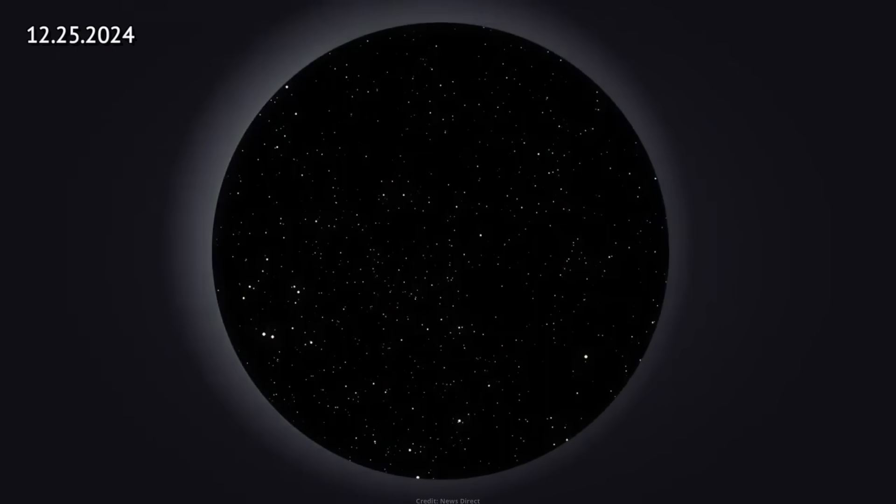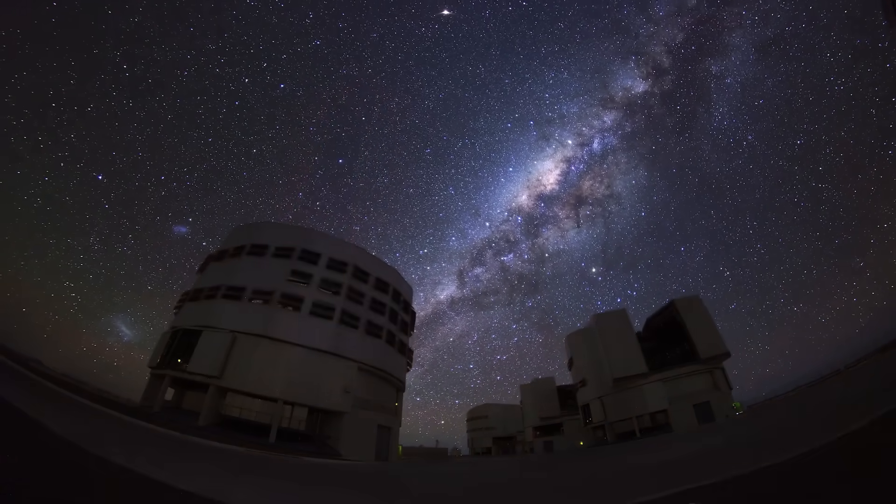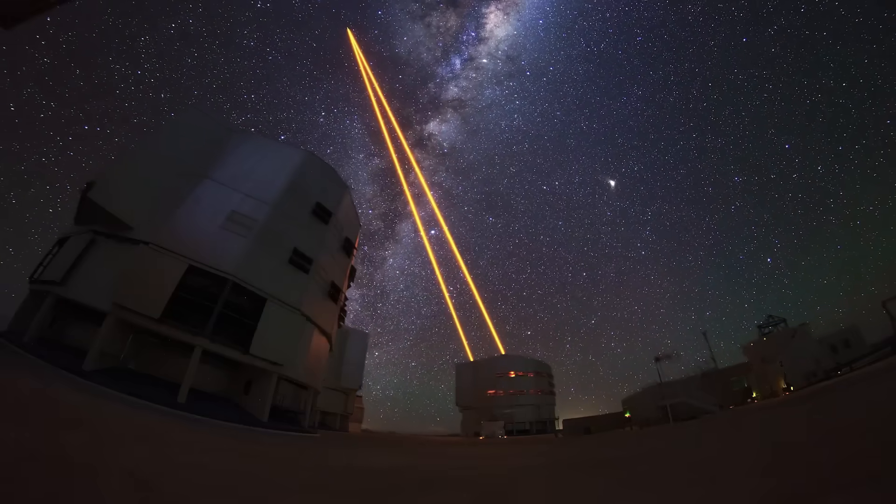On December 25, 2024, under the watchful gaze of the Atlas Asteroid Impact early warning system, a new cosmic wanderer made its grand entrance. Asteroid 2024 YR-4 streaked into view, its path captured by telescopes stationed across Hawaii, Chile, and South Africa.